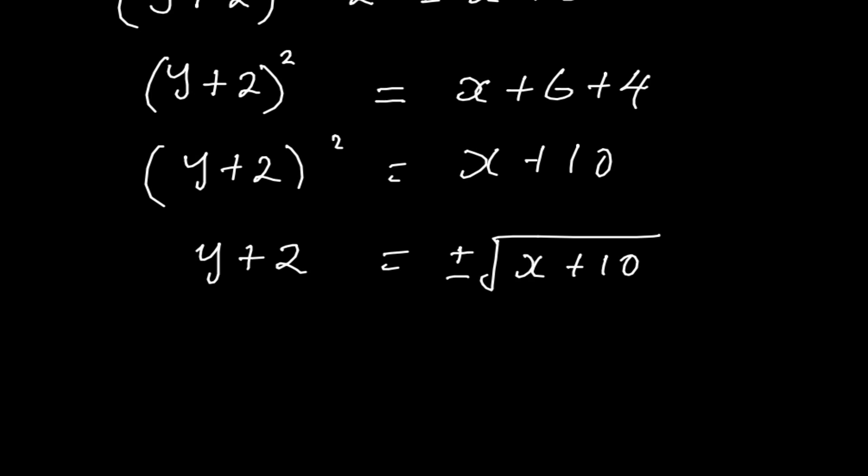Then we take that to the other side to give us y = -2 ± √(x + 10).